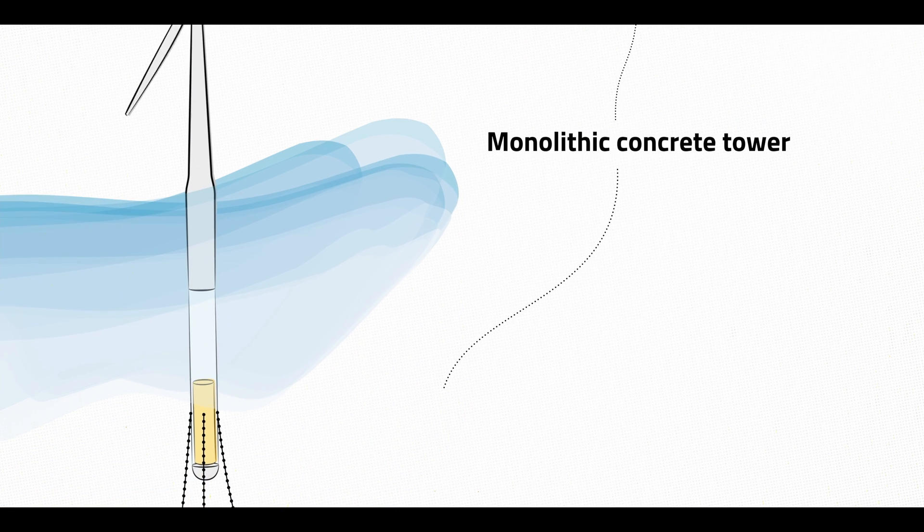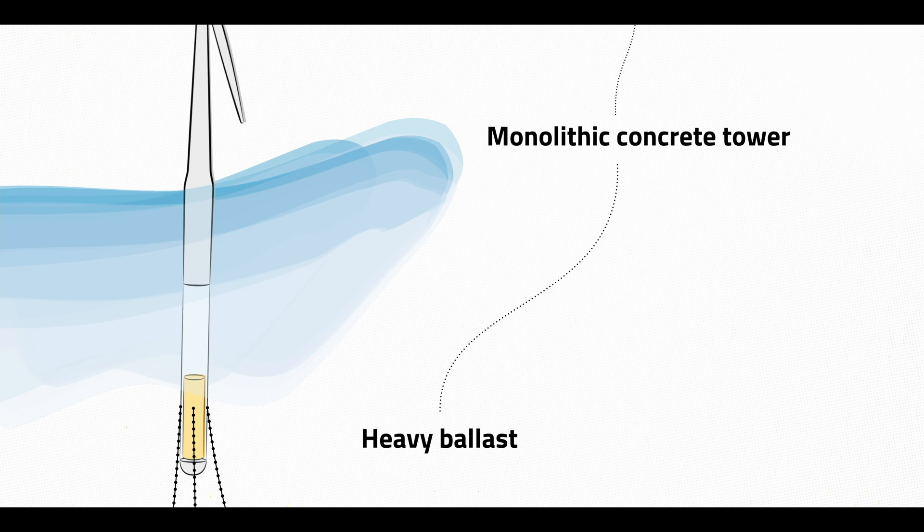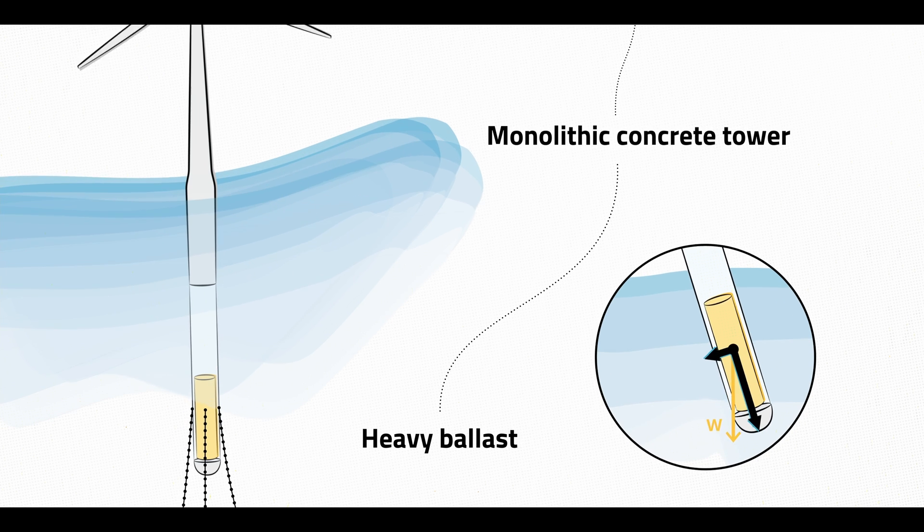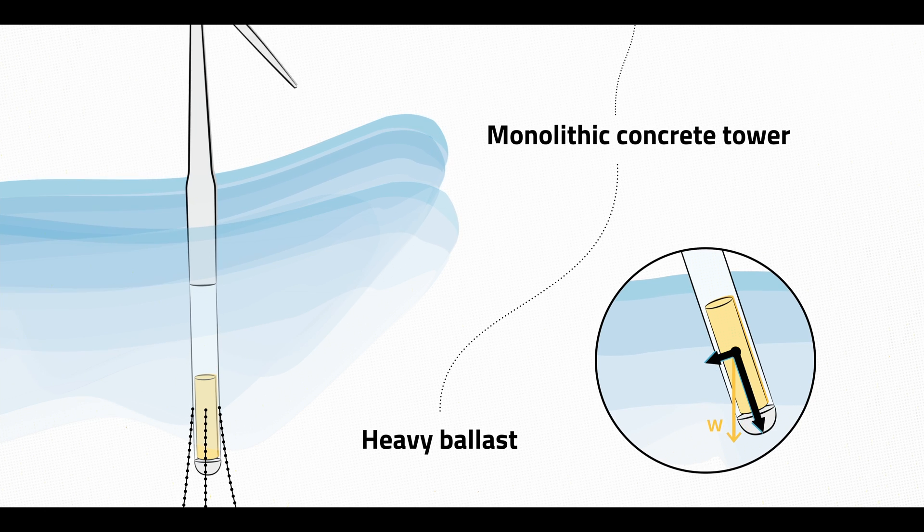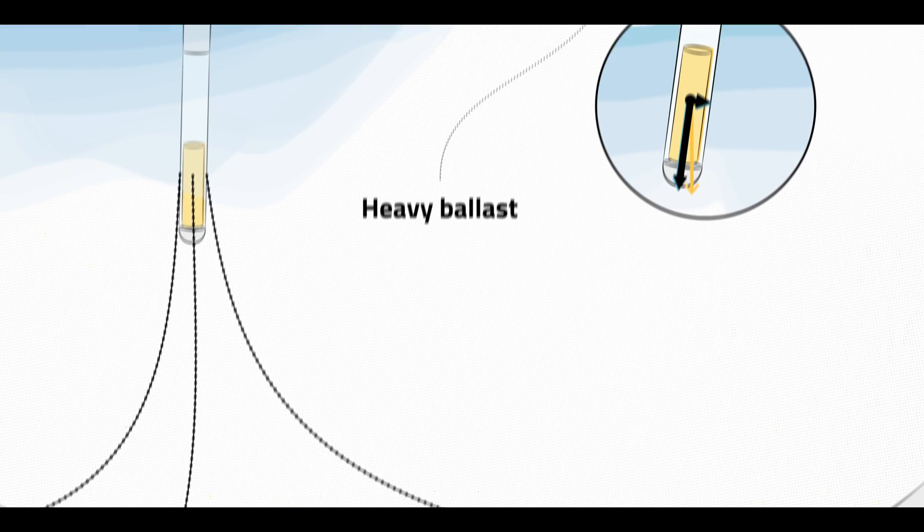The tower remains stable because a heavy ballast at the bottom of the floater produces recovering forces which counteract any destabilizing momentum. To prevent the whole structure from drifting, it is moored to the bottom of the sea.